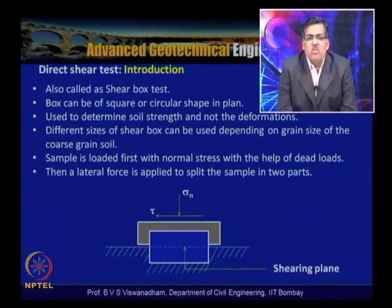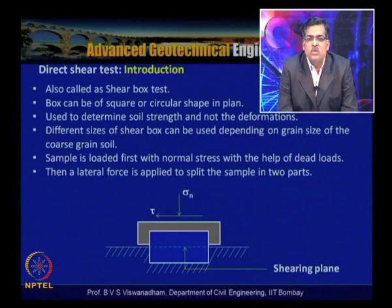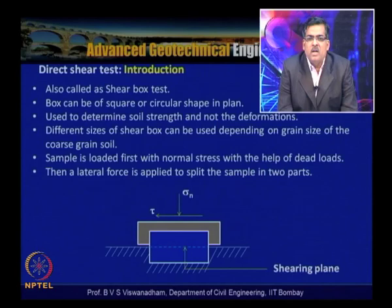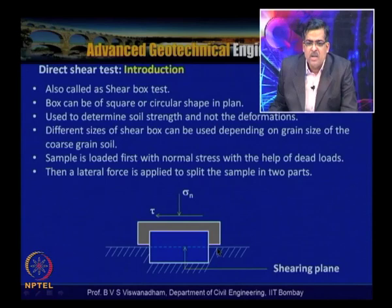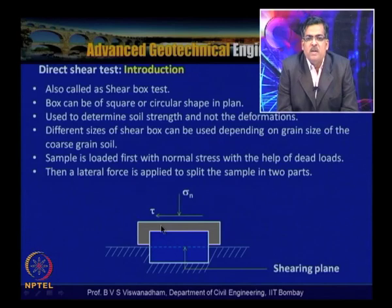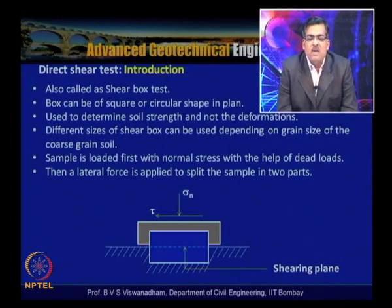This test method also allows determination of interface parameters — for example, when a pile interacts with soil or a retaining wall interacts with soil. The particular material is placed at the bottom with the required soil above, and the interface friction angle is measured. This is called the modified direct shear test, providing adhesion (CA) and interface friction angle for cohesive soils.